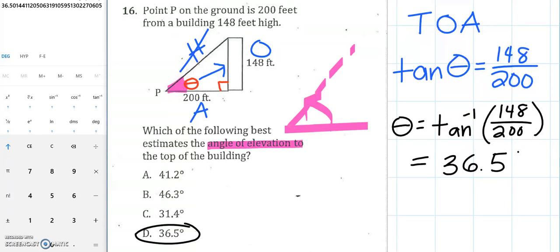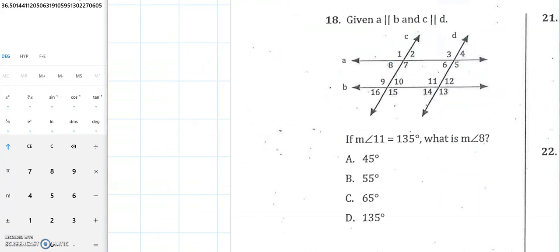which is choice D. All right, next question. Number 18 is another one of those parallel lines cut by transversal problems, just like number 1. In this case, we have angle 11, which is 135, and it's an obtuse angle.